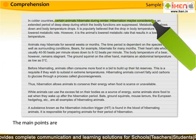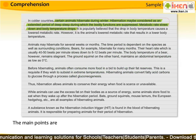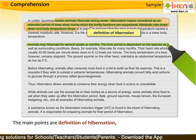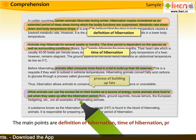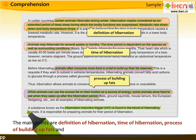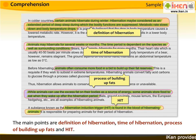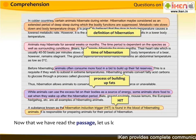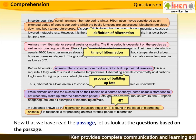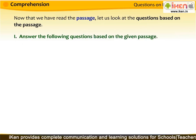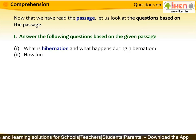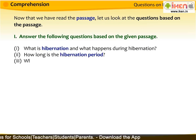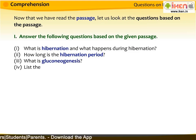The main points of the passage are: definition of hibernation, time of hibernation, process of building up fats, and HIT. Now that we have read the passage, let us look at the questions based on it. Answer the following questions based on the given passage. First question: What is hibernation and what happens during hibernation? Second question: How long is the hibernation period? Third question: What is gluconeogenesis? Fourth question: List the animals that hibernate.